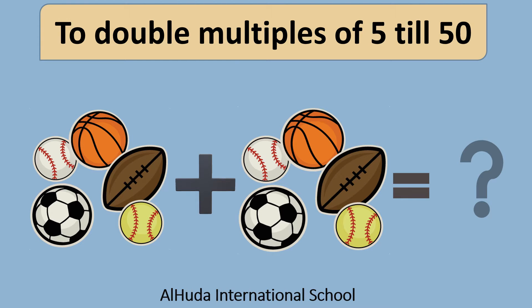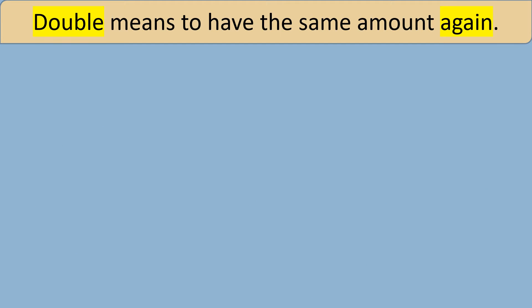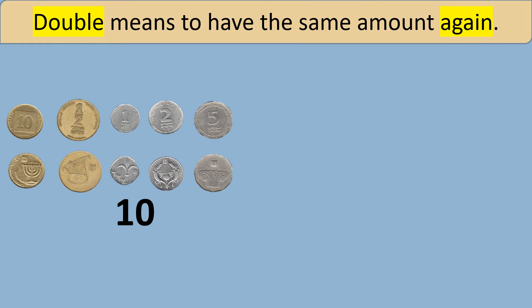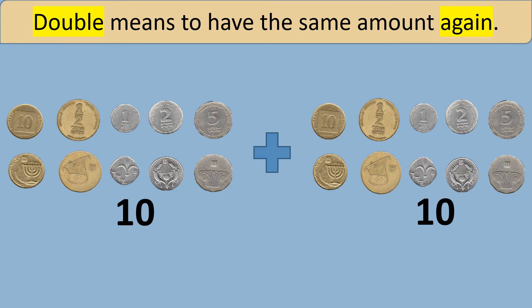Assalamu alaikum. Let's learn how to double multiples of 5 till 50. Double means to have the same amount again. I have 10 coins here and I will add 10 more coins to these 10 coins, which means I will be adding the number 10 twice — the same number twice. And when I add the same number twice, 10 plus 10, I get the answer 20, which means the double of 10 is 20.